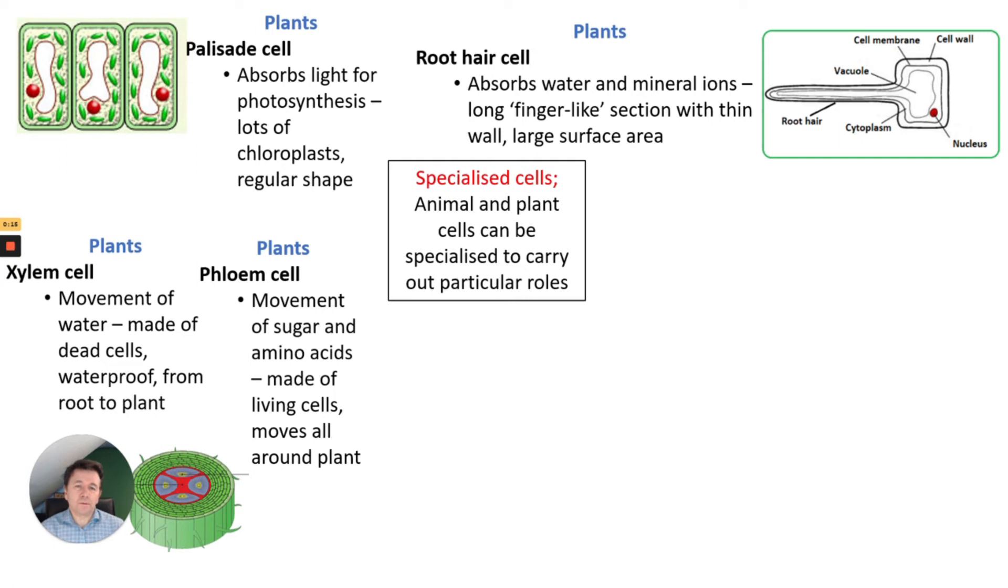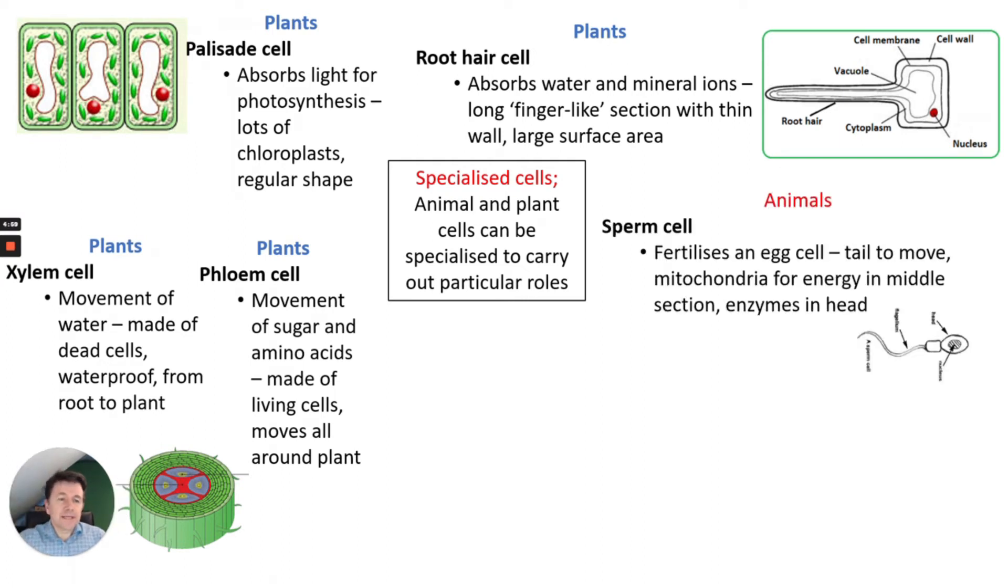In animal cells you'll need to know about sperm cells. A sperm cell fertilizes an egg cell. The tail can move due to mitochondria in the middle part that releases energy. It also has enzymes in the head which break down the egg surface so it can gain entry into the egg or ovum.